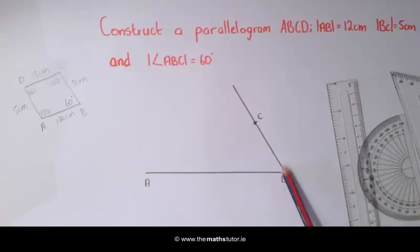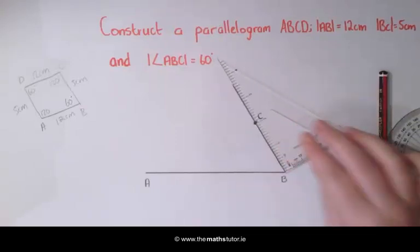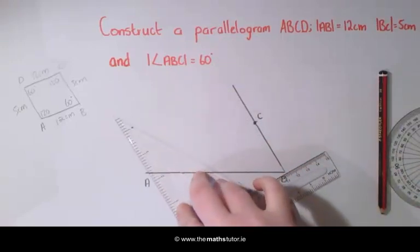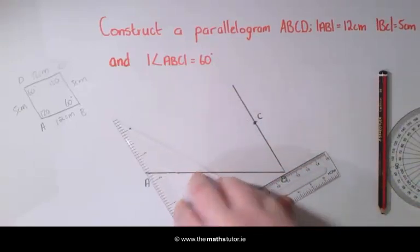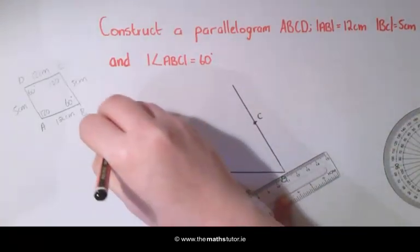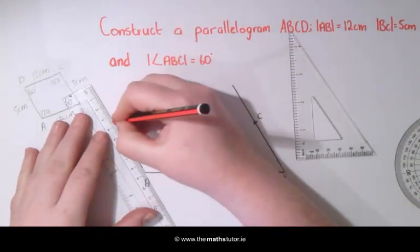We are then going to draw a parallel line using our set square. We are going to line it up and using our ruler as a guide we are going to slide along until we come to A and extend it out.